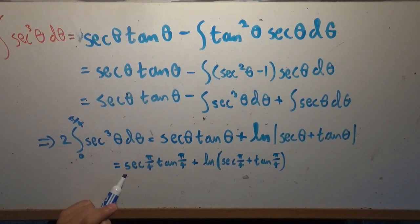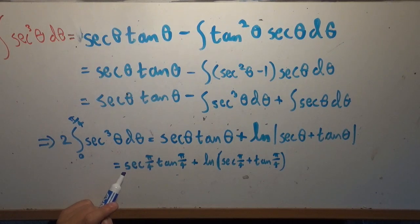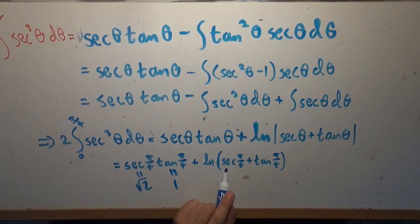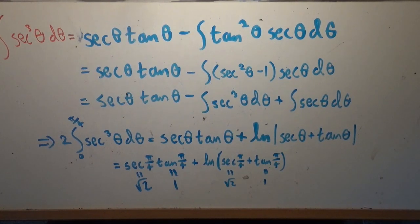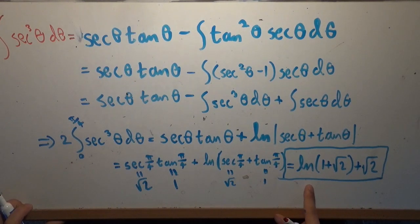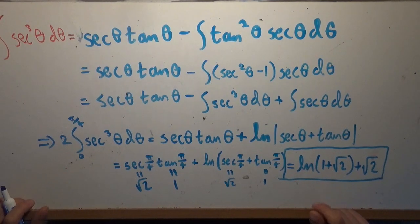So we just need to evaluate the upper bound and we'll have our universal parabolic constant. The secant of pi over 4 is 1 over cosine of pi over 4, and cosine of pi over 4 is root 2 over 2, which means secant of pi over 4 equals the square root of 2. Tangent of pi over 4 is equal to 1, so the upper bound is square root of 2 plus 1, and the universal parabolic constant equals the natural logarithm of 1 plus square root of 2, plus the square root of 2. It's about 2.29.